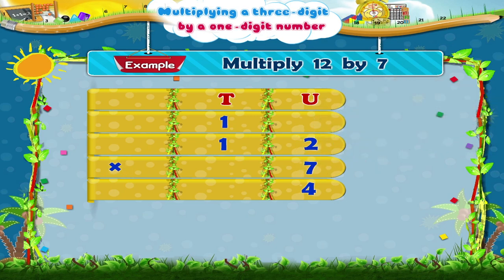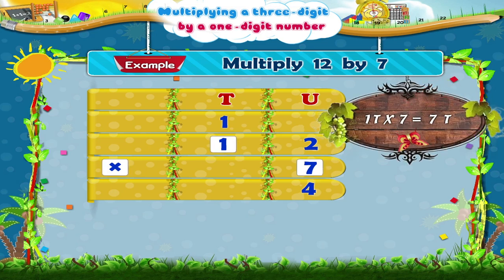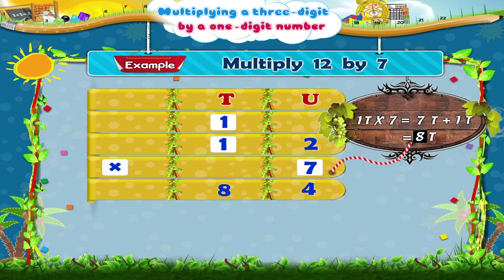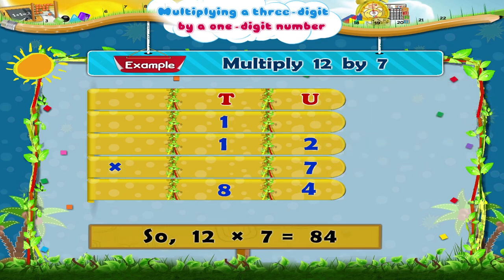Now multiply the tens digit one in twelve by seven. We get seven tens. Add to this the carried over one, and we get eight tens. Write it in the product in the tens place. The product is eighty-four.